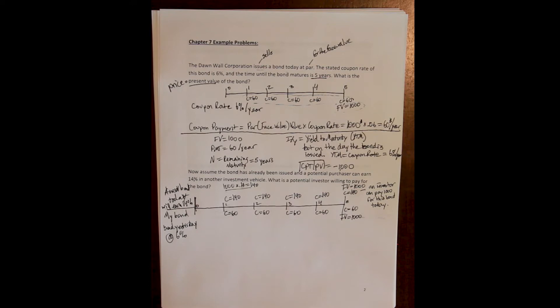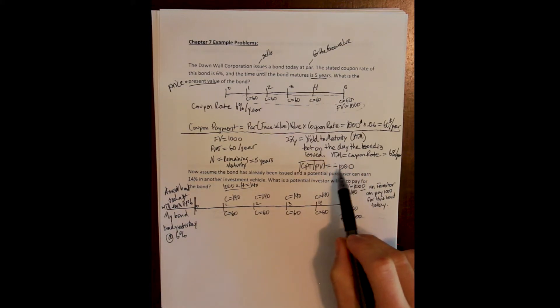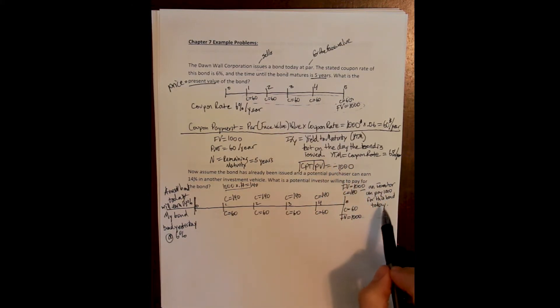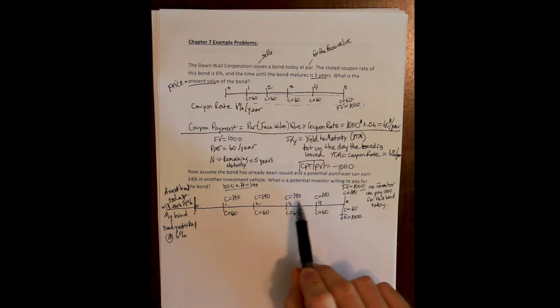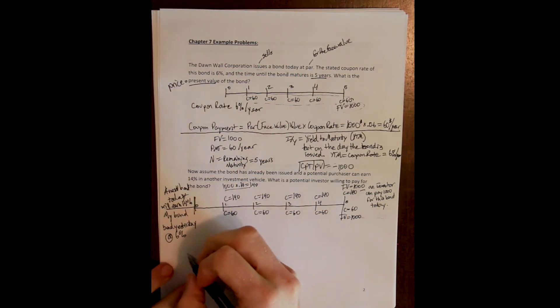So why would anyone be interested in my old bond from yesterday? You can make more than double for exactly what I paid. I'm out there trying to sell my bond for a thousand bucks because I don't want to lose any money — that's what I paid yesterday. But everybody's calling me crazy because they can go pay a thousand bucks for something that pays more than double what I'm offering. The only way for me to possibly sell this bond is to drop my price — I have to sell it at a discount.